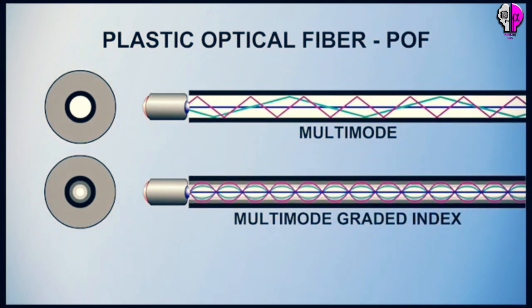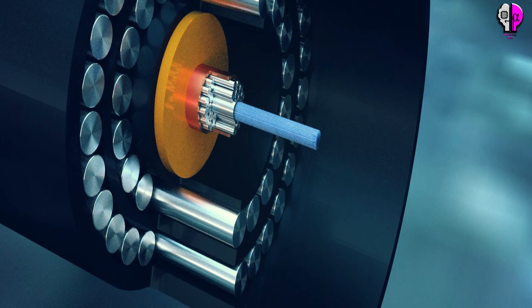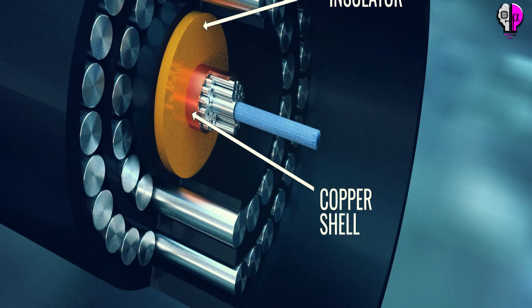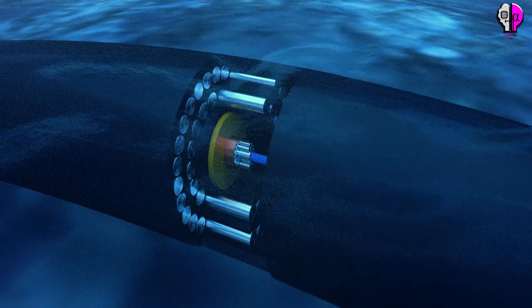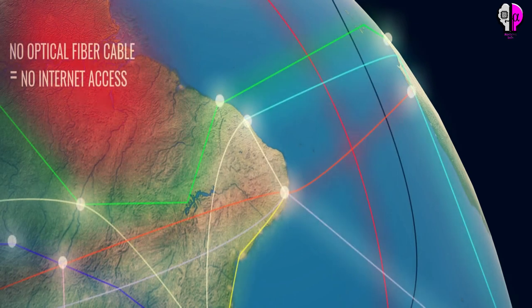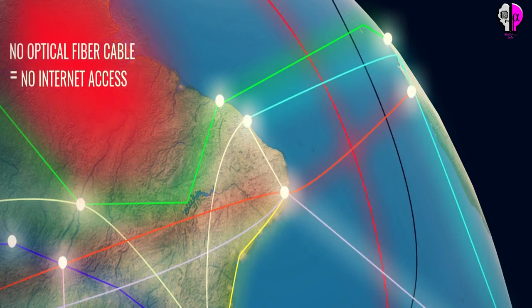Fiber optics has several advantages over traditional metal communication lines. They have a much greater bandwidth than metal cables, which means they can carry more data. They are less susceptible than metal cables to interference and also much thinner and lighter than metal wires. Data can be transmitted digitally rather than analogically.